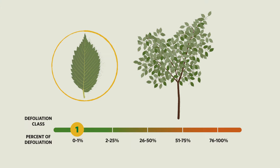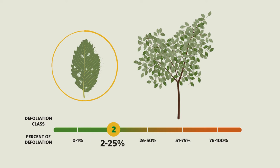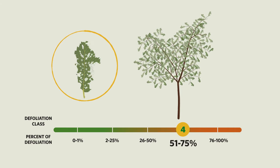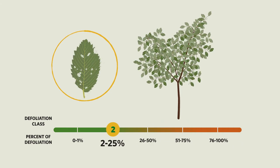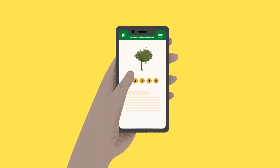Defoliation is measured in 25% classes, with class 1 being no signs of defoliation to a trace amount, class 2 being 2–25%, class 3 being 26–50%, and so on. Once you've estimated the class of leaf defoliation, record your estimate in the Healthy Trees, Healthy Cities app.